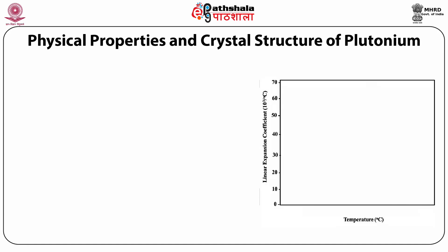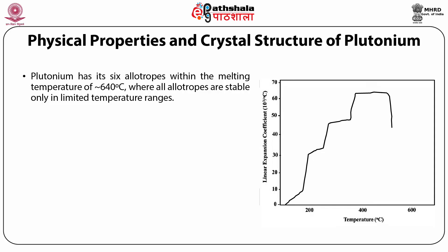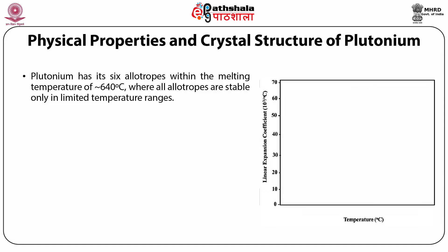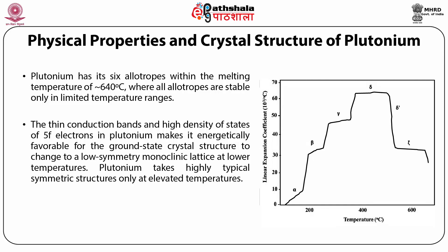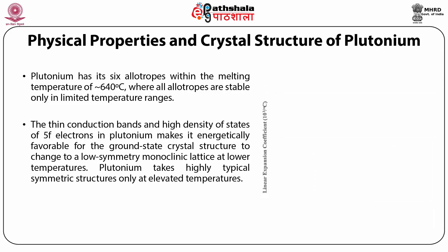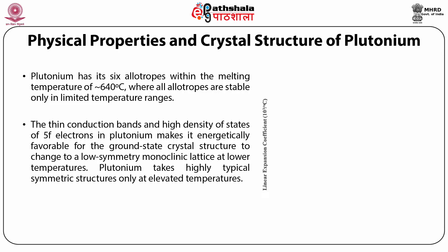Now we will discuss the physical properties and crystal structure of plutonium. Plutonium has 6 allotropes within the melting temperature of around 640°C, where all allotropes are stable only in limited temperature ranges. The thin conduction bands and high density of states of 5f electrons in plutonium makes it energetically favourable for the ground state crystal structure to change to a low-symmetry monoclinic lattice at lower temperatures.